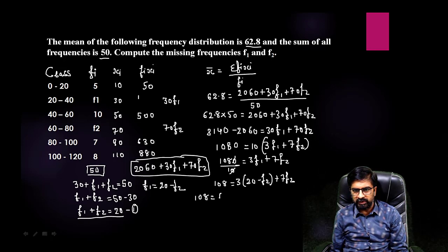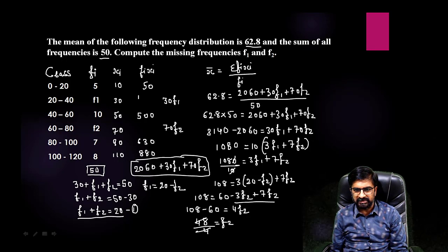Now take it here. If you will subtract, 108 minus 60 is 48. And then 48 by 4 is equals to f2. We can cancel this and we will get 12. So here you are getting f2 is equals to 12. First missing frequency you got it.